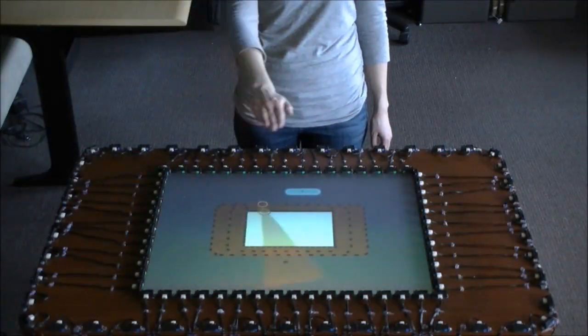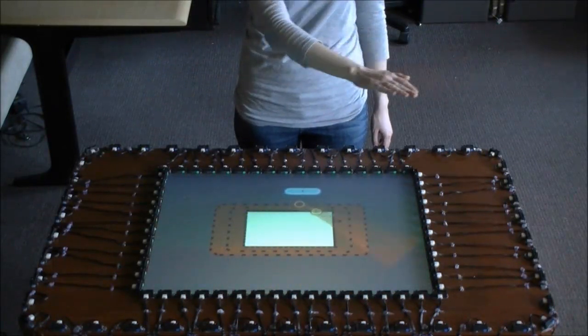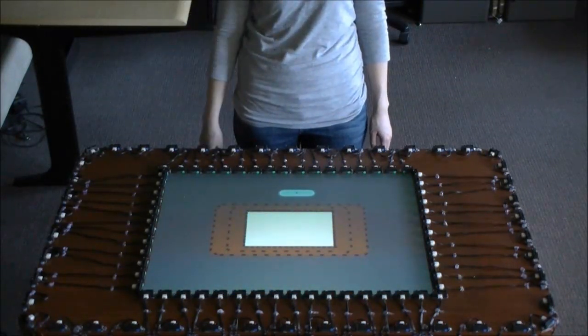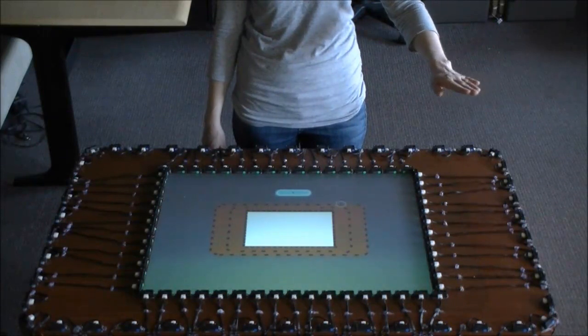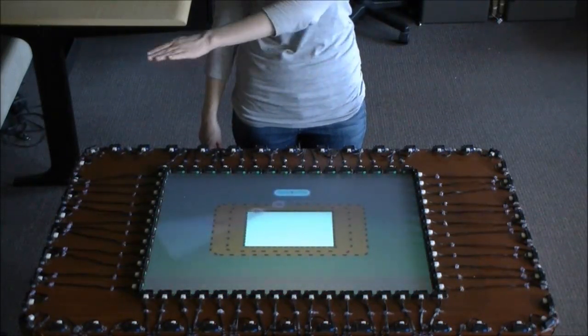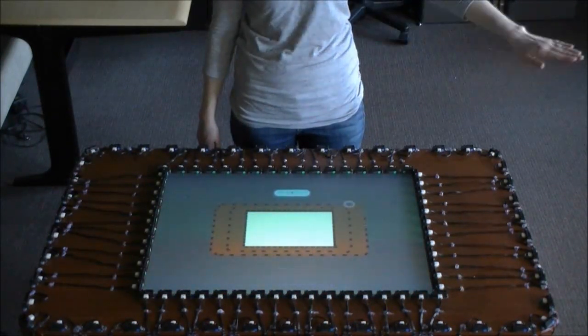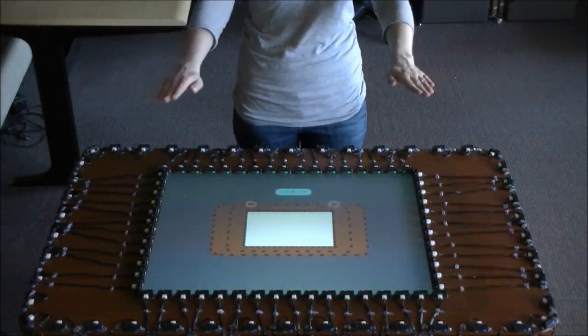When the inner ring of sensors becomes activated, MEDUSA can infer that the user's hand is above the surface. The disparity of activation locations between the outer and inner rings enable MEDUSA to determine the approximate angle of user's arms, as visualized by the cone seen here.